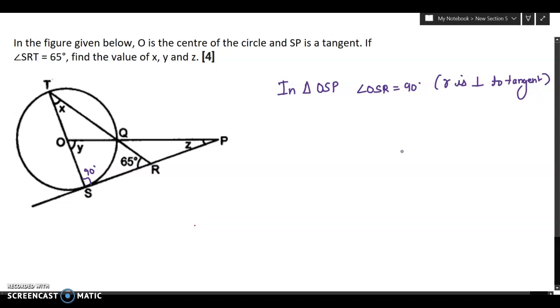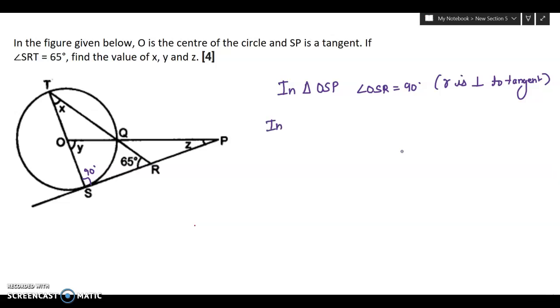You can find out value of x in triangle TSR. This triangle TSR, so it will be x plus 90 plus 65 is equal to 180 degrees. Sum of angles of a triangle is 180 degrees. So x will be 25 degrees.